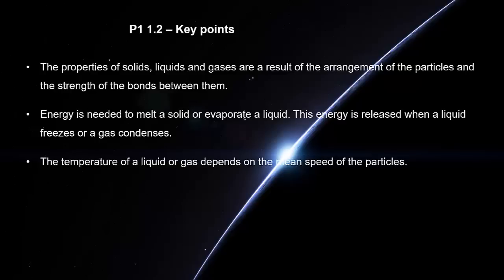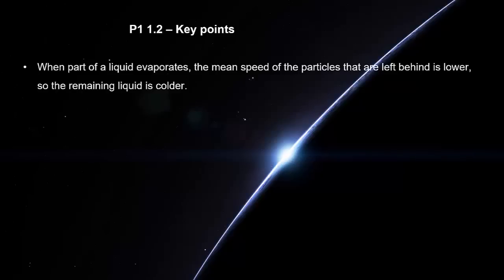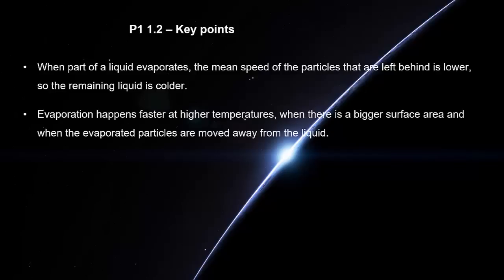This energy is released when a liquid freezes or a gas condenses. The temperature of a liquid or gas depends on the mean speed of the particles. When part of a liquid evaporates, the mean speed of the particles that are left behind is lower, so the remaining liquid is colder. Evaporation happens faster at higher temperatures, when there is a bigger surface area, and when the evaporated particles are moved away from the liquid. Condensation happens faster at lower temperatures.